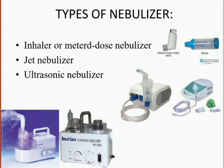There are three types of nebulizer. First is the inhaler or metered dose nebulizer, commonly used for asthma patients requiring prolonged inhalation — it is easily portable and works with a spray mechanism. Second is the jet nebulizer, commonly used in clinical setups. Third is the ultrasonic nebulizer, used when administering hypertonic solutions; it provides a large amount of mist dispersed into the lungs using ultrasonic waves.